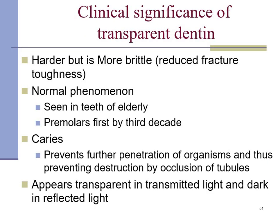Clinically, the transparent dentine is harder but more brittle because it loses the resilience of the collagen fibers that predominate in normal dentine. It is a normal phenomenon which occurs by around the third decade, when the premolars start showing transparent dentine. Caries accentuates the sclerotic dentine, and once sclerotic dentine is formed, it prevents further penetration of organisms.